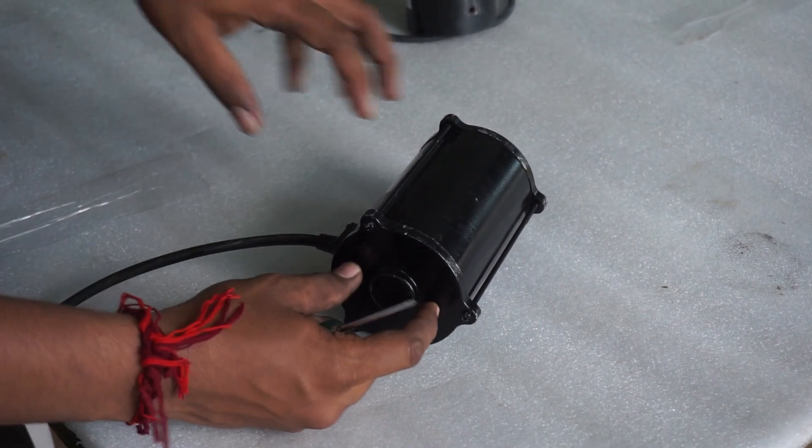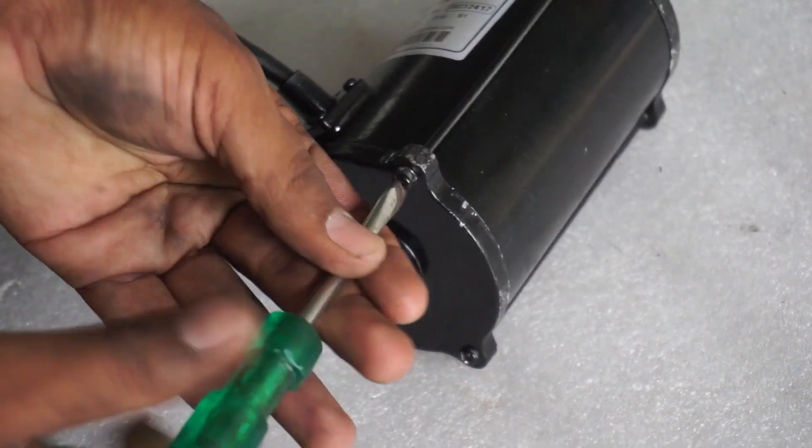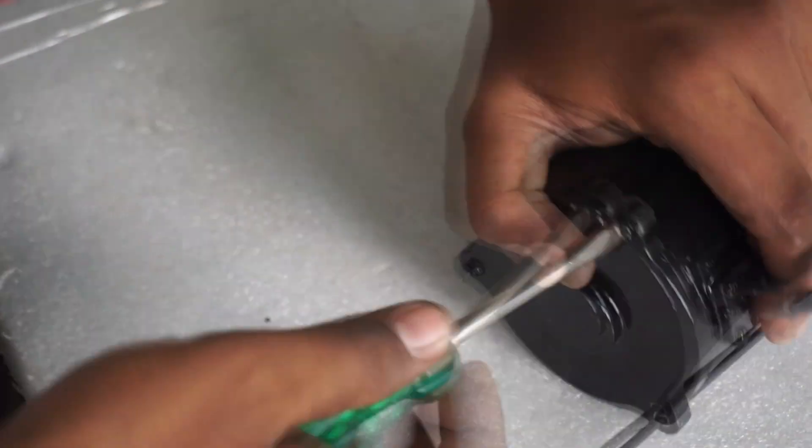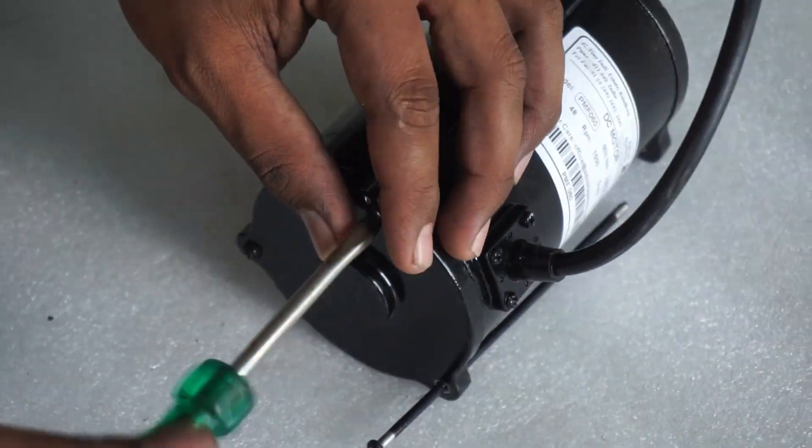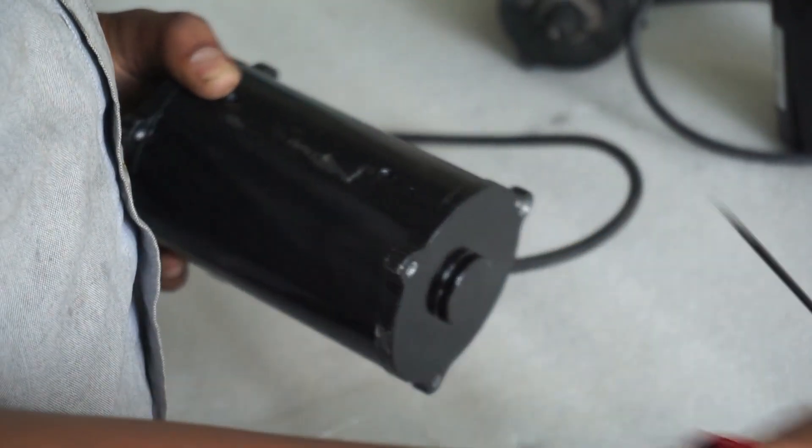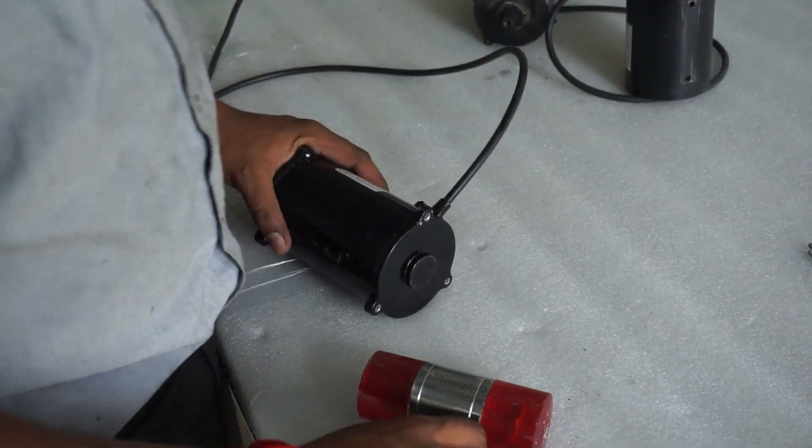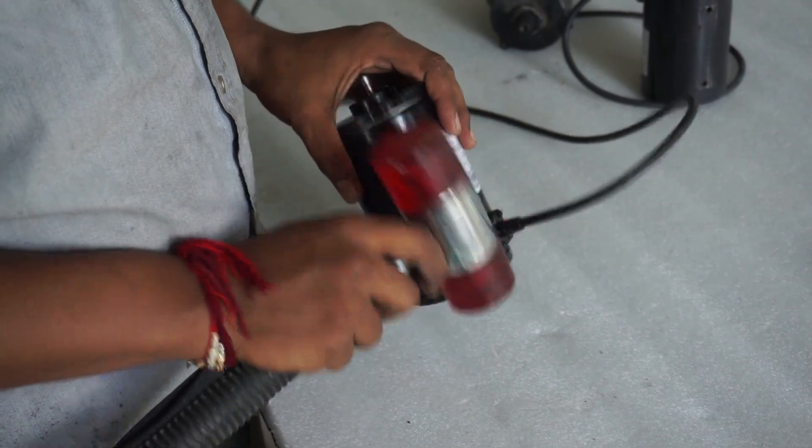Remove the back plate of the non-drive end by removing the long screws. You can now pull the plate on the drive end and non-drive end. You can use a soft hammer to get them off easily.